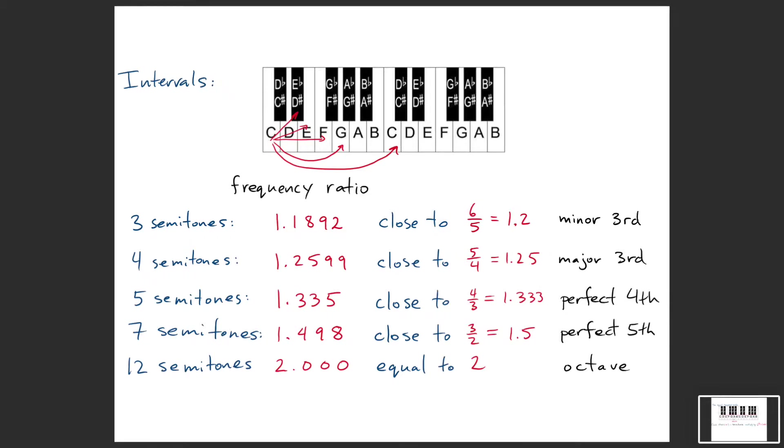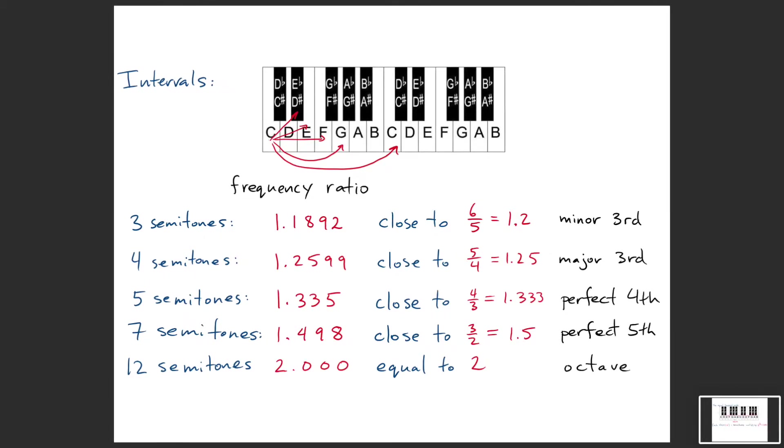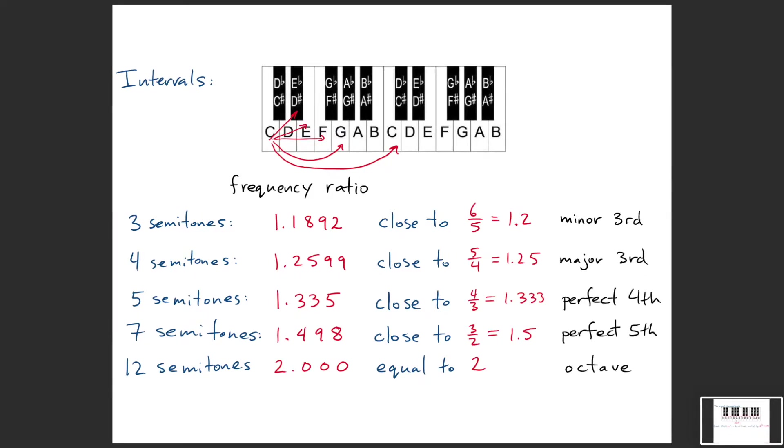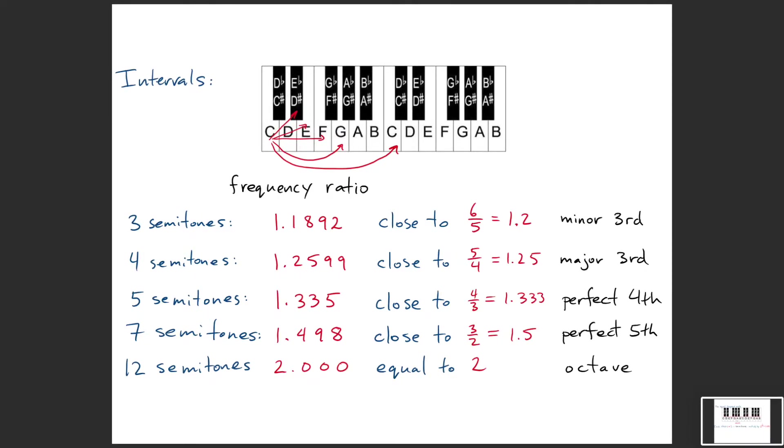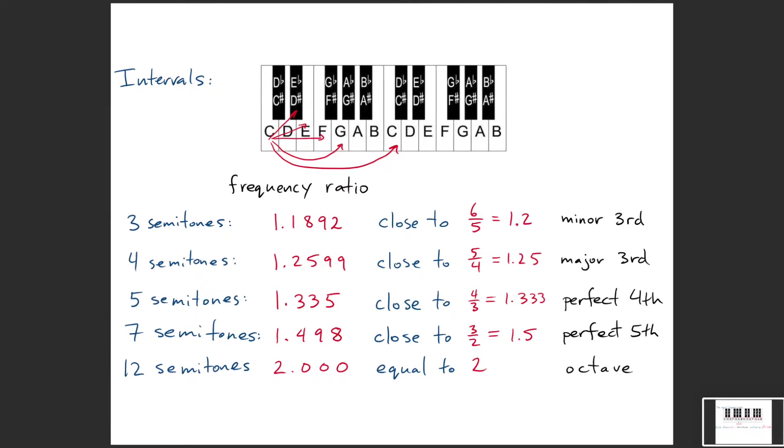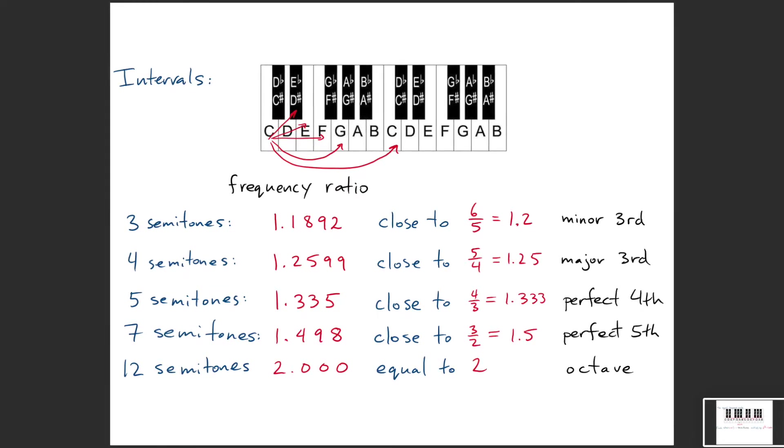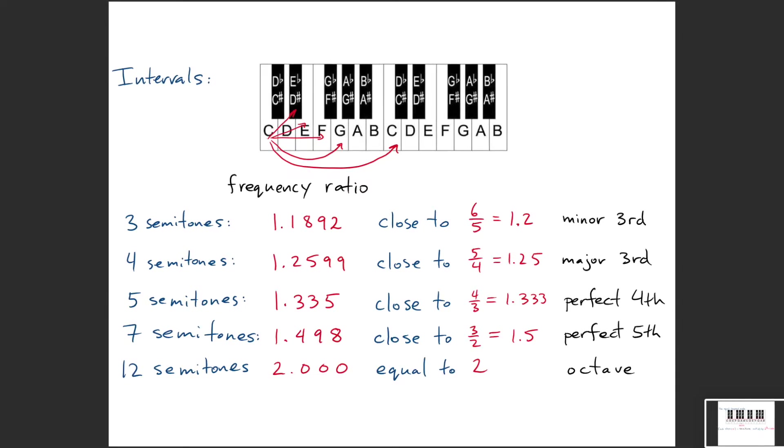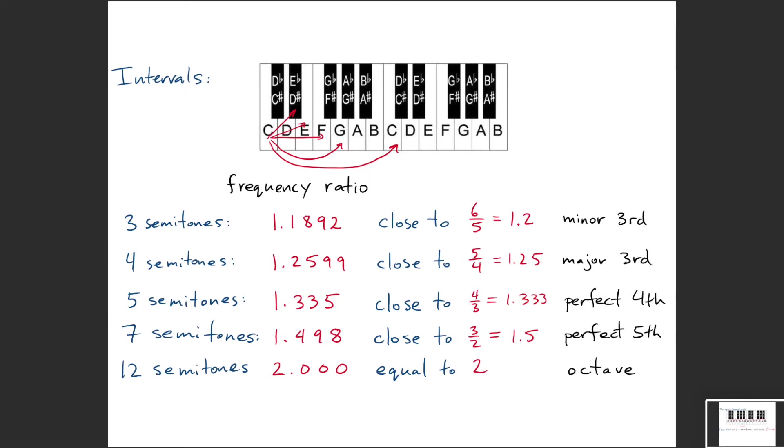All of the simplest intervals that appear in music, or at least very good approximations to those. If I go up five semitones, that corresponds to a frequency ratio of 1.335, and that's really close to the interval of 4/3, which is a perfect fourth. If I go up seven semitones, that's 1.498, and that's very close to a perfect fifth.